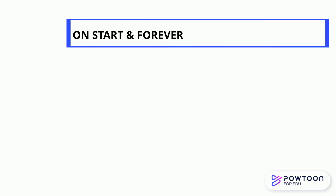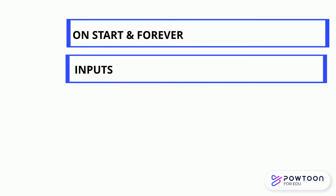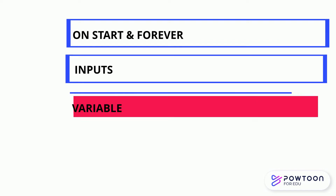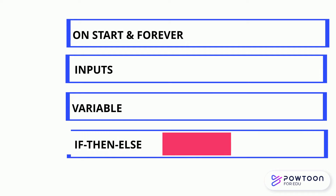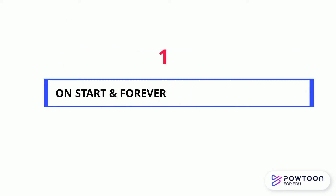There are four parts in this lesson: the on-start and forever functions, various inputs, variables, and the logical function — if, then, else. We will also cover how to display a number and string inside on-start or forever.